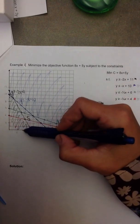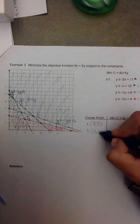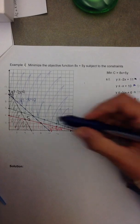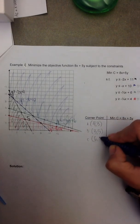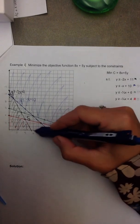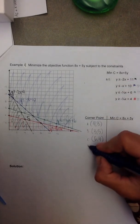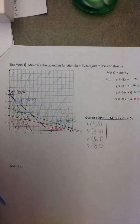The second one, B, is the point 3,5. The third corner point is 6,4. And the fourth and final corner point is 8,2.